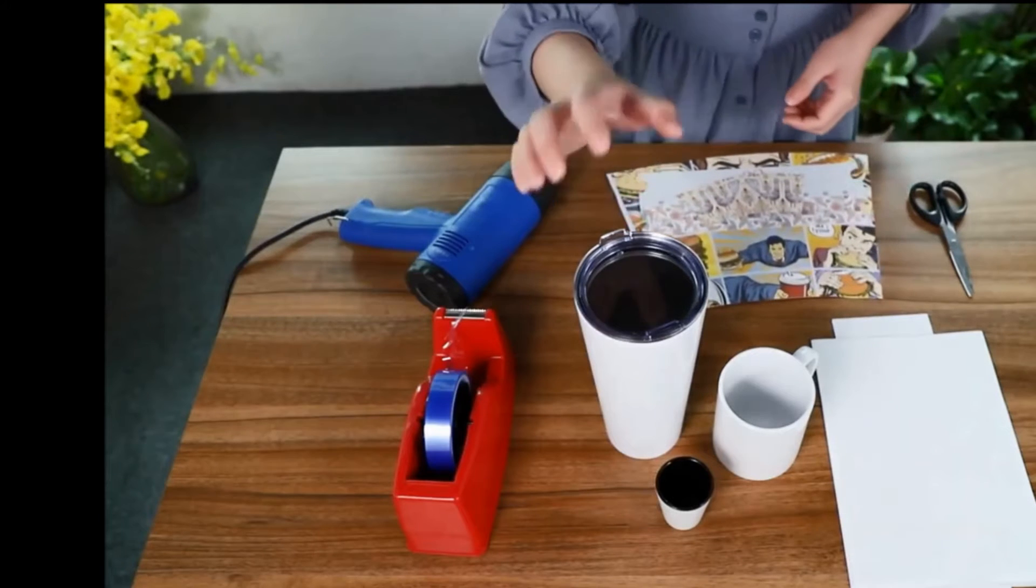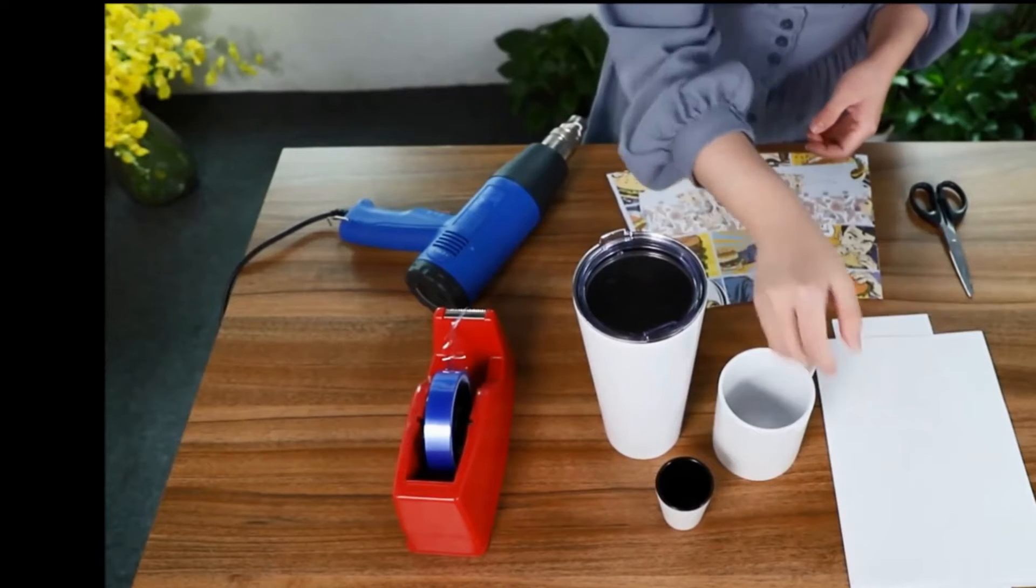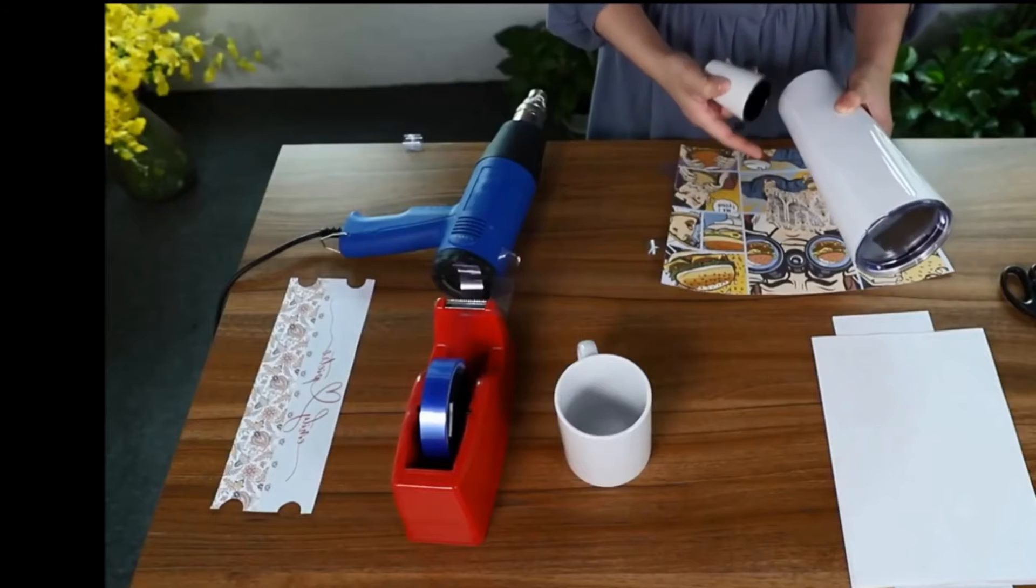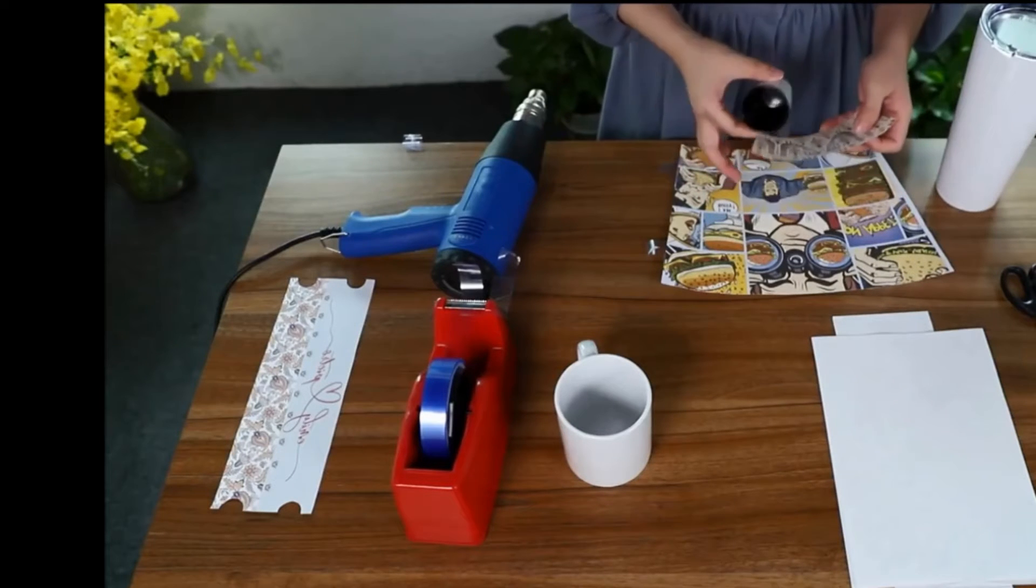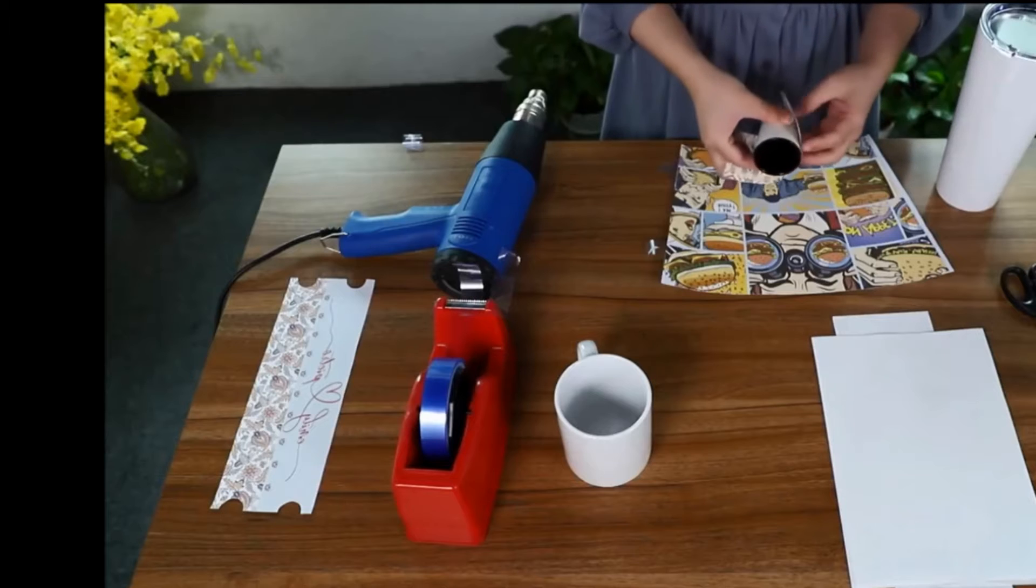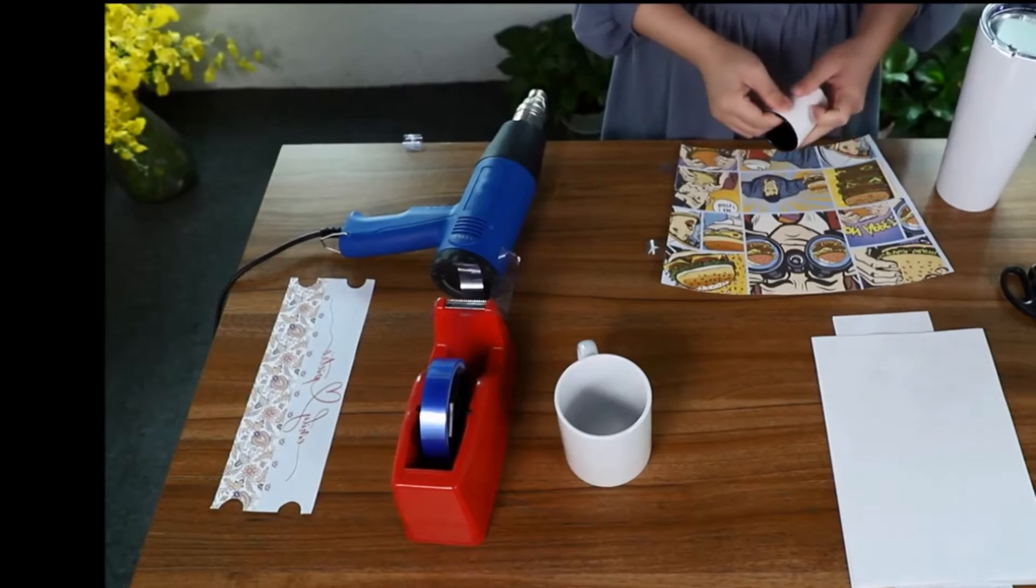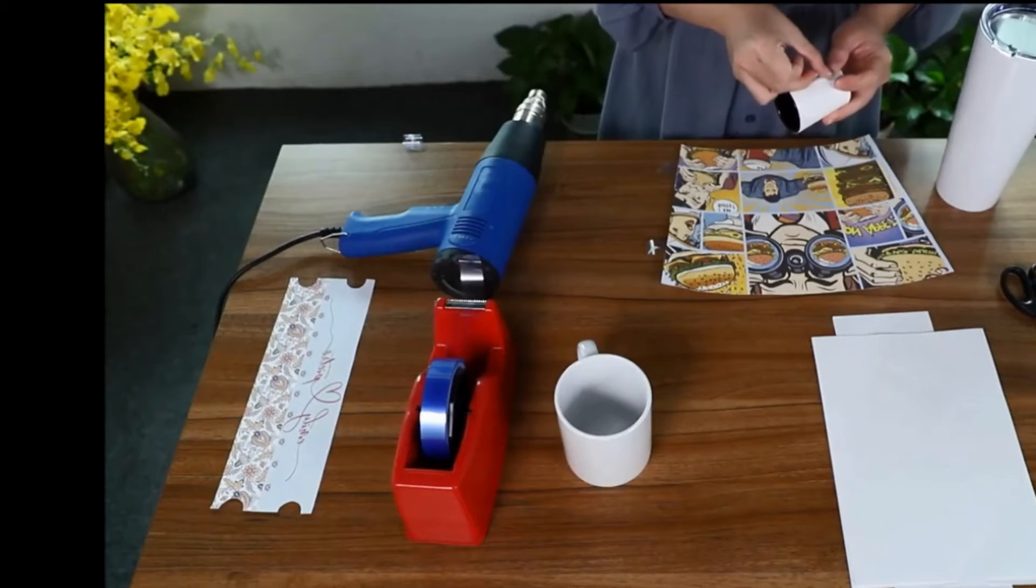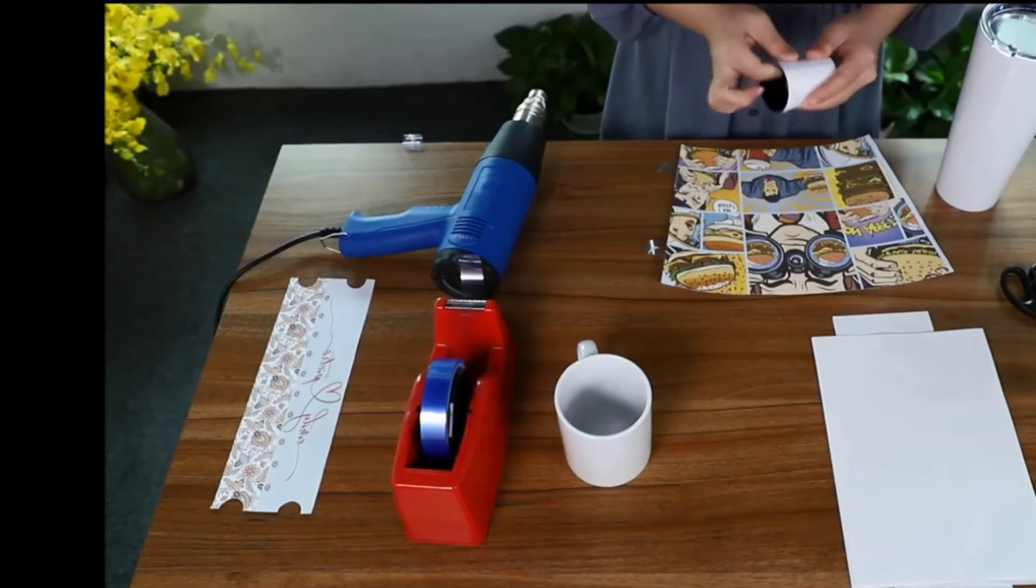And I'm going to print a large tumbler, 11 oz white mug, and a short glass. I'm going to print the large tumbler and the little short glass first. The first step to print these two stainless drinkware is easy. Just wrap them with the images and fix the images with tape.